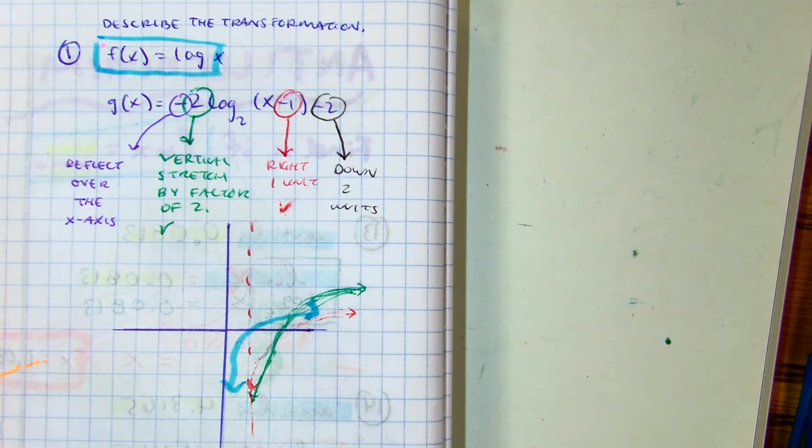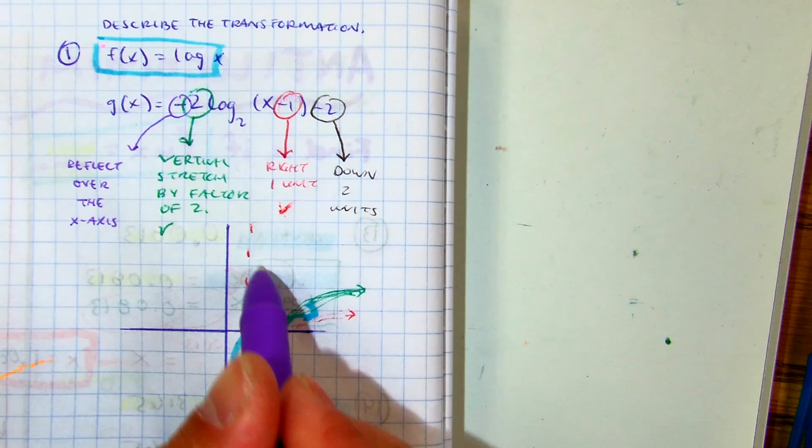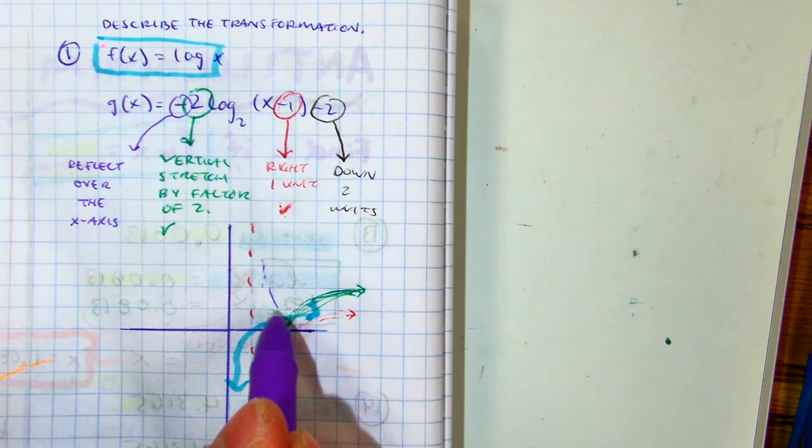And then you're going to reflect it over the x-axis. So it's going to flip. So it's going to look something like this.